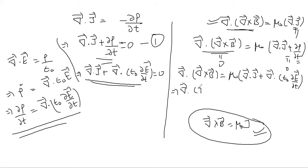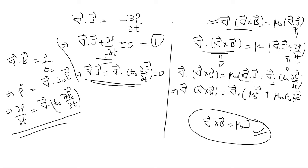Taking del dot del cross B, we set it equal to mu naught del dot J plus mu naught epsilon naught del dot partial E by partial t. Since del dot is common on both sides, we can factor it out, giving del cross B equal to mu naught J plus mu naught epsilon naught partial E by partial t.